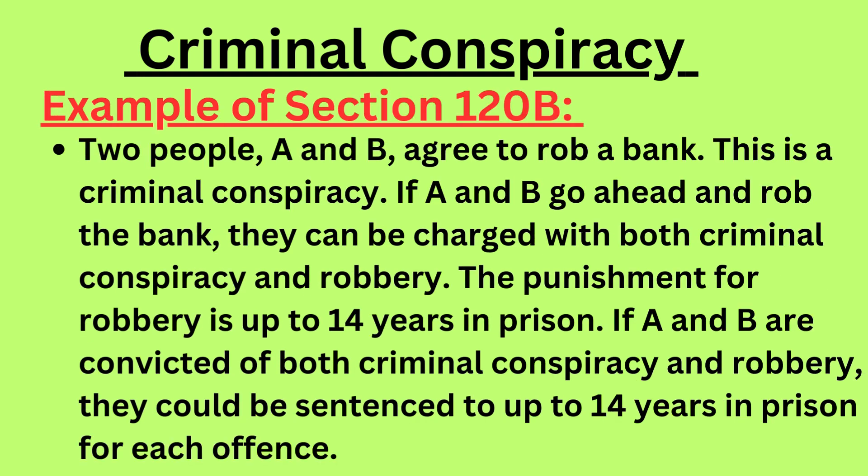For example, two people A and B agree to rob a bank — this is a criminal conspiracy. If A and B go ahead and rob the bank, they can be charged with both criminal conspiracy and robbery. The punishment for robbery is up to 14 years in prison. If convicted of both offences, they could be sentenced to up to 14 years for each offence.